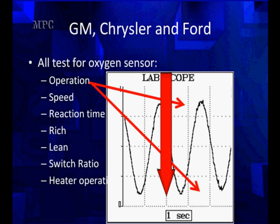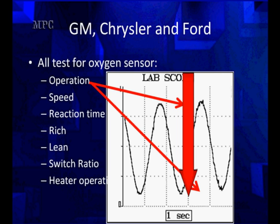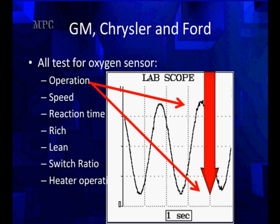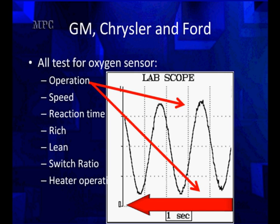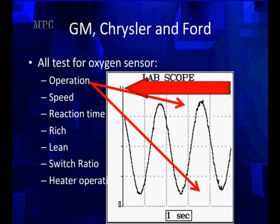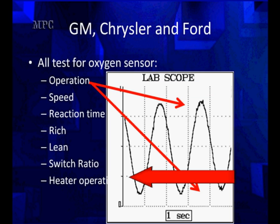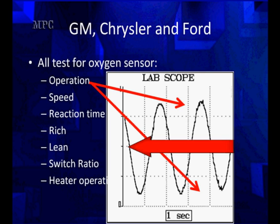On other systems, you will see ten vertical lines representing ten seconds. But each one is going to show the same picture, one second per square. Going vertically, we go from zero at the bottom to one volt at the top. That means each one of those three horizontal lines represents about 0.25 volts, with the middle one being a half a volt.